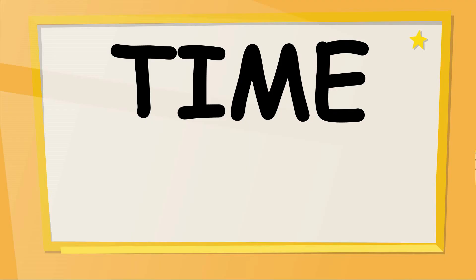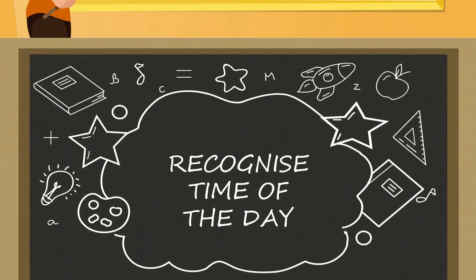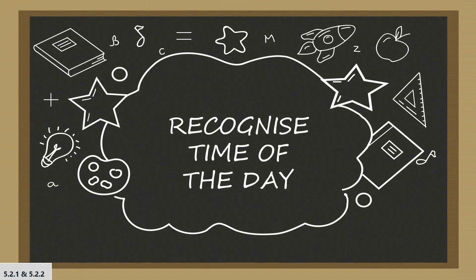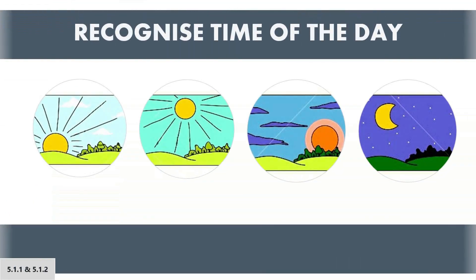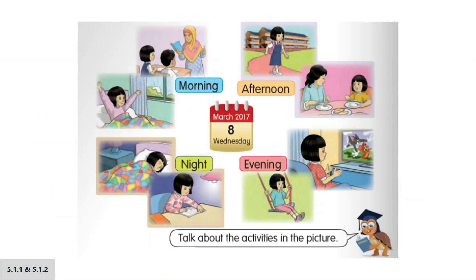Good day pupils. Our topic for today is time. You can refer to Mathematics Year One textbook part two, page 31 to 34. Let's recognize time of the day. There are four different times of the day. They are called morning, afternoon, evening, and night. We do different activities at different times of the day.